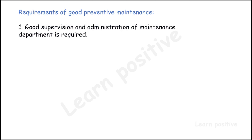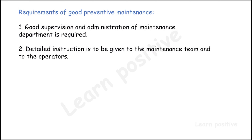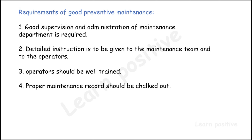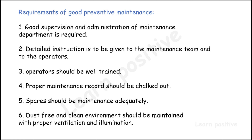The requirements of good preventive maintenance are: good supervision and administration of the maintenance department; detailed instructions given to the maintenance team and vehicle operators; operators should be well trained; proper maintenance records must be maintained to analyze past and present problems; spares must be maintained adequately; and a dust-free, clean environment with proper ventilation and elimination of waste should be maintained in the workplace.